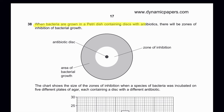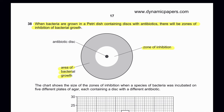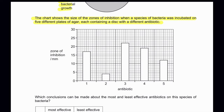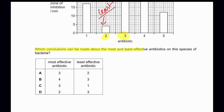Question 38: Bacteria were grown on petri dishes with antibiotic discs, creating zones of inhibition. Charts show the size of zones for five different antibiotics. The most effective antibiotic is number 3 (largest zone) and the least effective is number 2 (smallest zone). The correct conclusion about most and least effective antibiotics is option A.